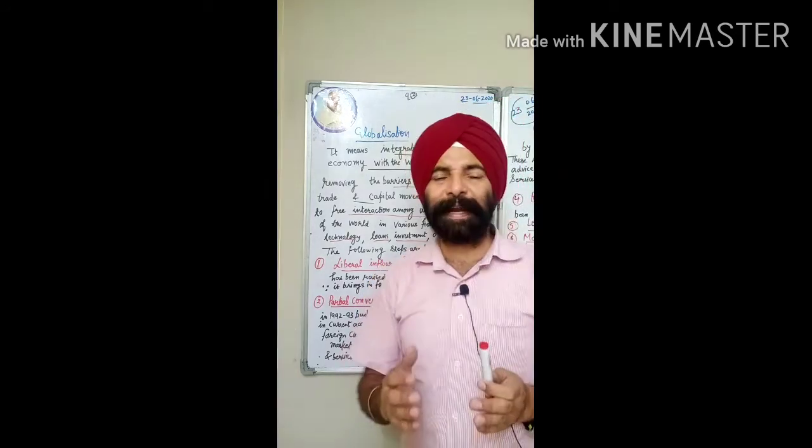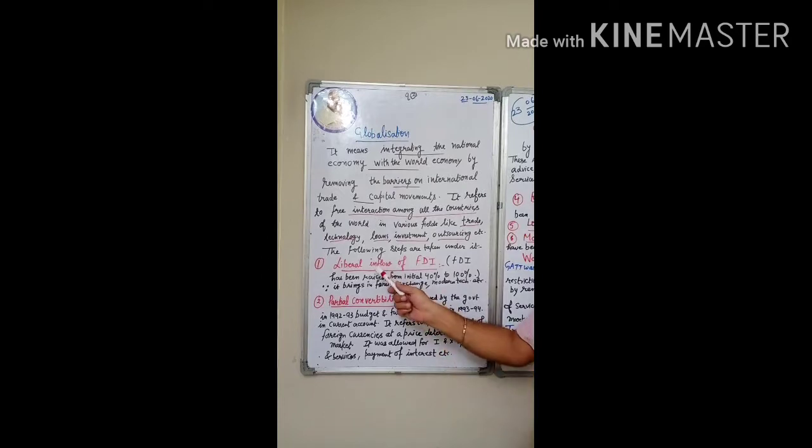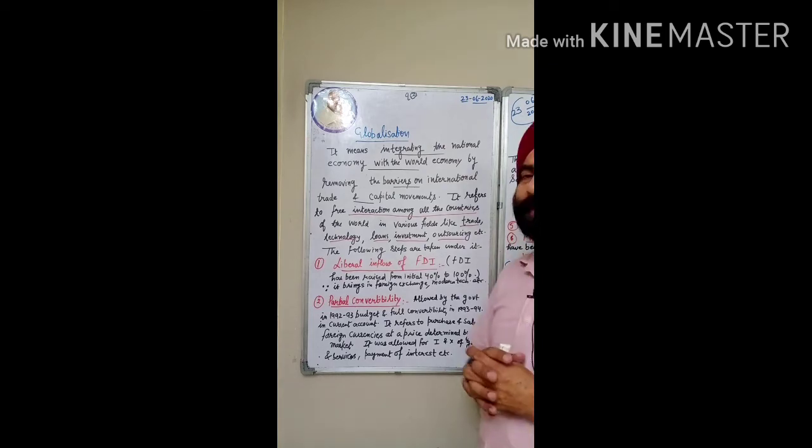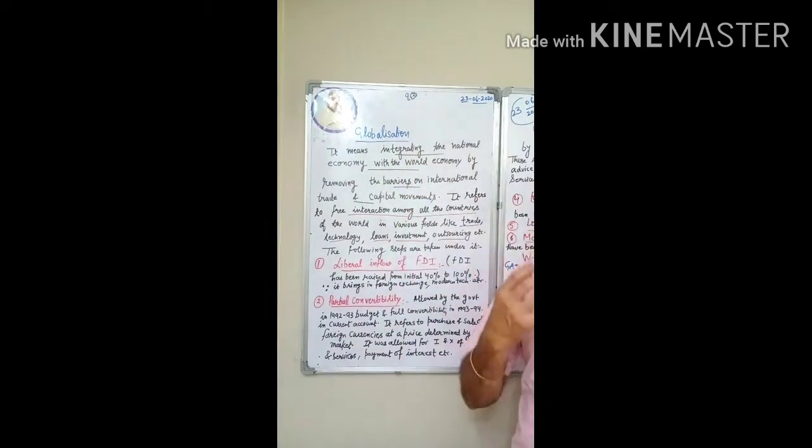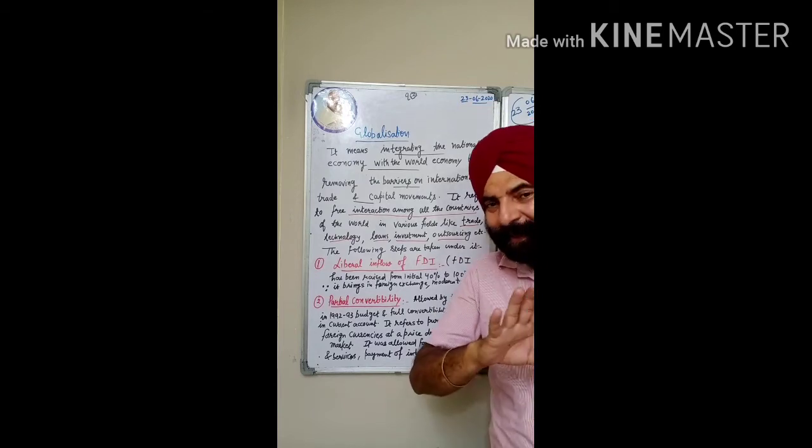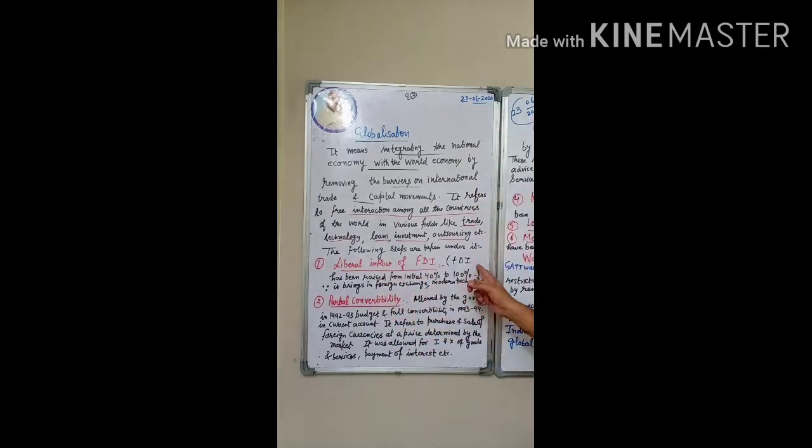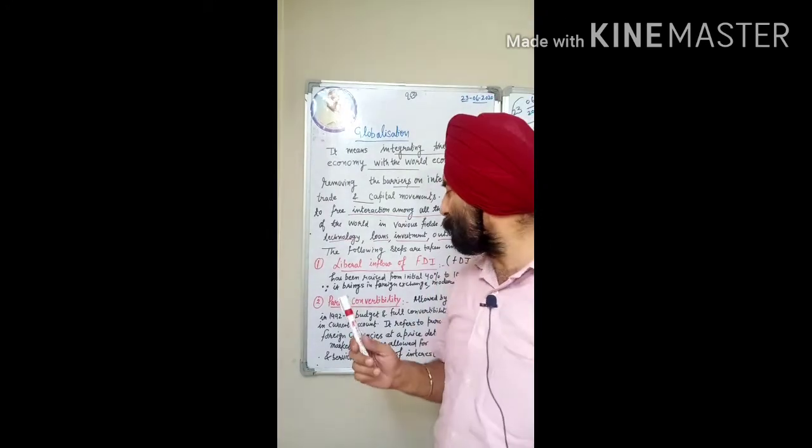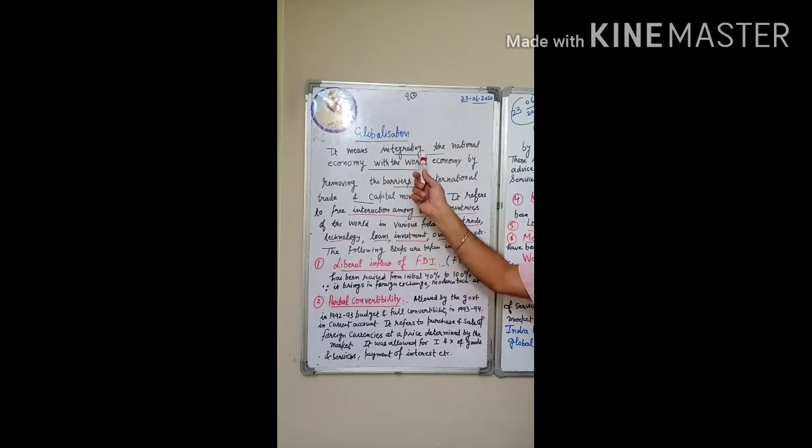The reforms that took place under globalization: First is the liberal inflow of foreign direct investment. The FDI has been liberalized. Why did we give this liberty? Because the foreign exchange crisis was gone. The FDI has been raised from initial 40% to 100% because it brings in foreign exchange, modern technology, etc. So this was the first step under globalization.